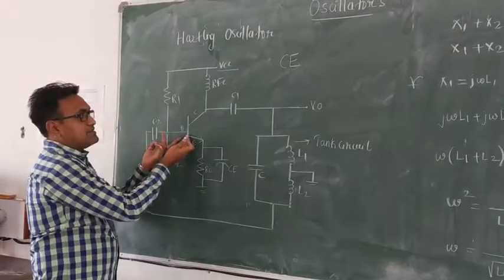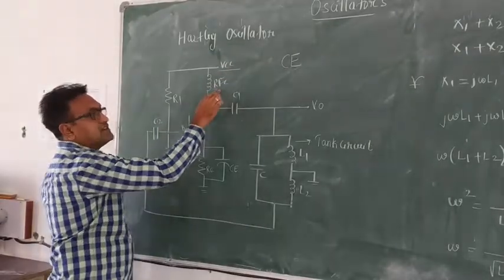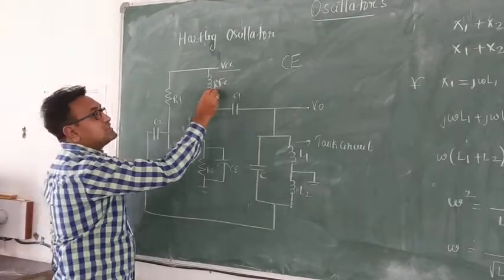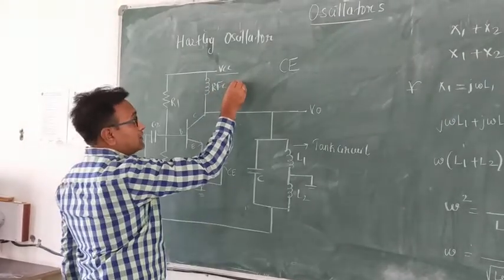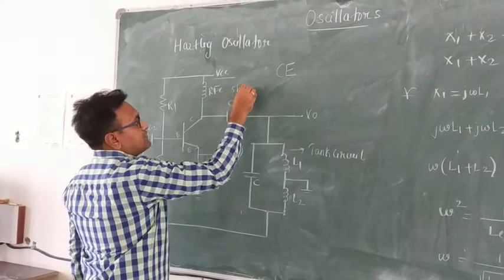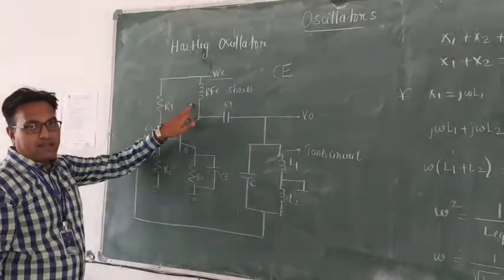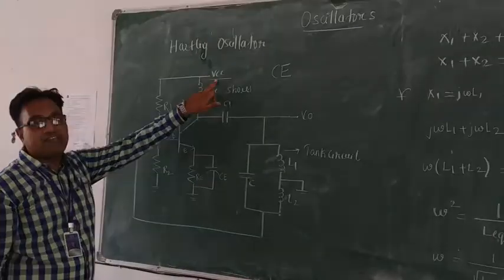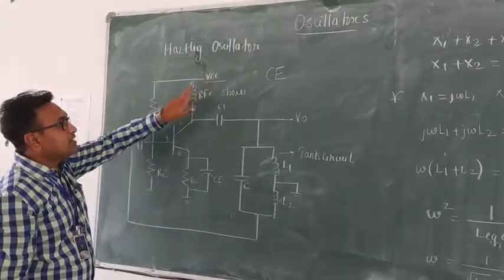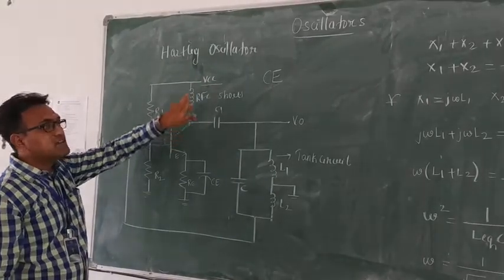So DC bias is applied to the bias and RFC. RFC is a radio frequency choke. So this radio frequency choke will act as a short circuit when DC supply is applied and open circuit when a higher frequency is applied. So here there is DC, so it will work as a short circuit.